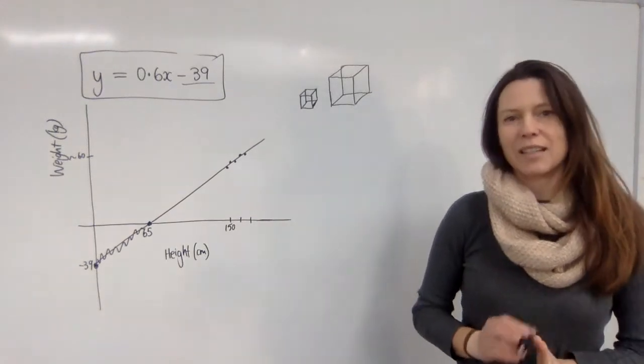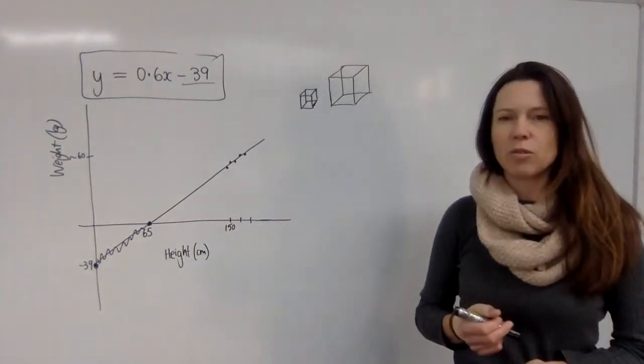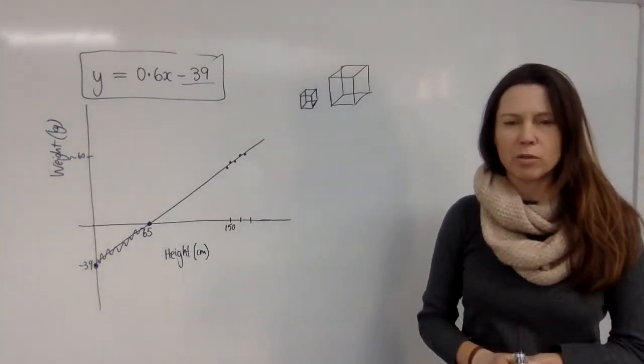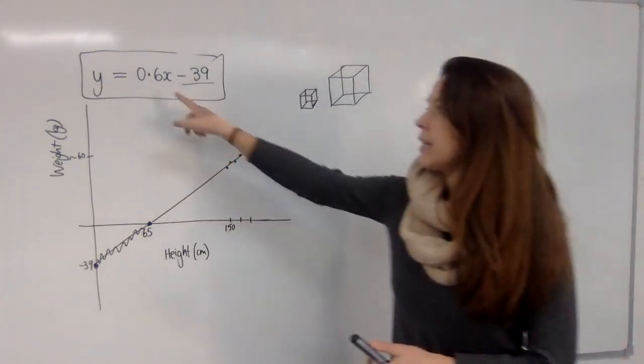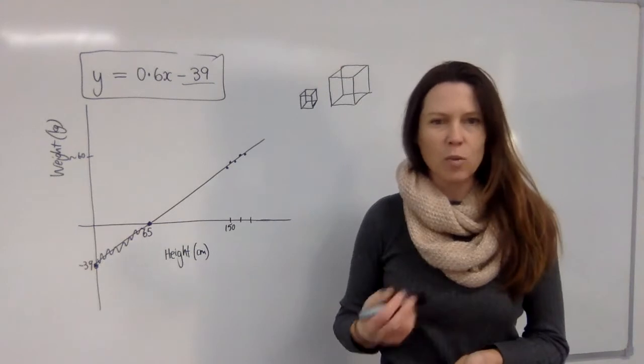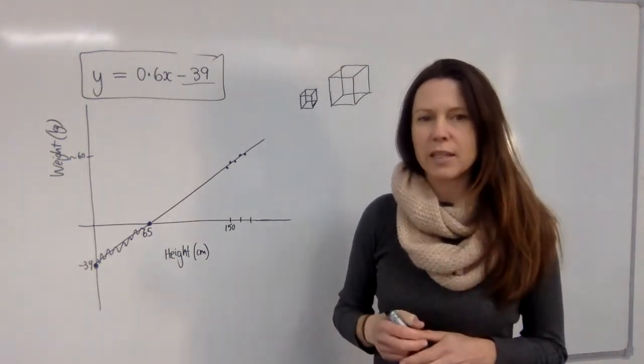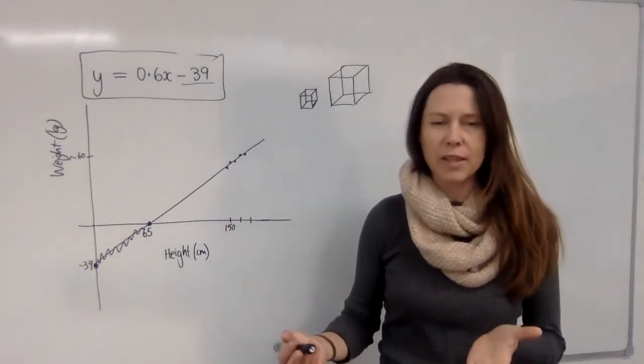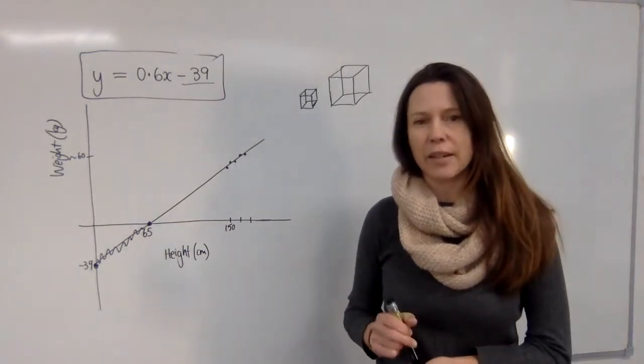Now if the data isn't linear we're not expected in this course to come up with an equation that models it. We are looking at linear data and we've seen how we can find A and B so that we can find the gradient and the y-intercept, but we always need to take into account that there could be limitations on how we use that line even if the data is linear.